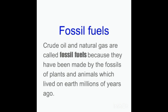Crude oil and natural gas are called fossil fuels because they formed from plants and animals naturally preserved underground. Over millions of years, under high temperature and pressure beneath the earth's surface, these organisms formed a fuel composed of hydrocarbons — compounds made of hydrogen and carbon. Fossil fuels take thousands to millions of years to form.